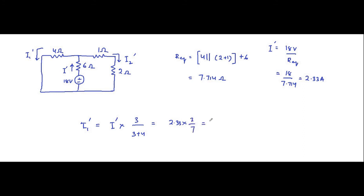This comes to approximately 1 ampere. Indeed, 2.33 multiplied by 3 is 6.99, which divided by 7 is equal to 1 ampere. So I1 dash is also equal to 1 ampere.